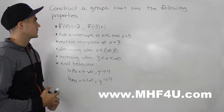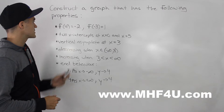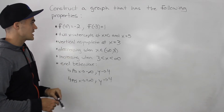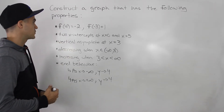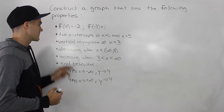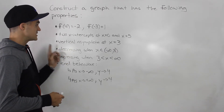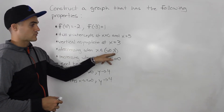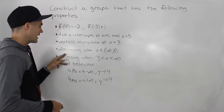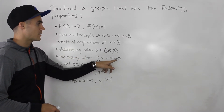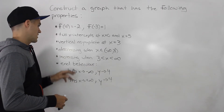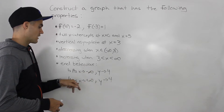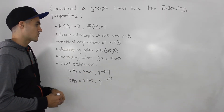The last question of the test — we have to construct a graph that has the following properties: f(4) equals negative 2, f(-3) equals positive 1. There are two x-intercepts at x=0 and x=5. There's a vertical asymptote at x=3. The graph is decreasing when x is between negative infinity and 3, and increasing when x is between 3 and positive infinity. The end behavior: as x approaches negative infinity, y approaches 4, and as x approaches positive infinity, y approaches 4 as well.